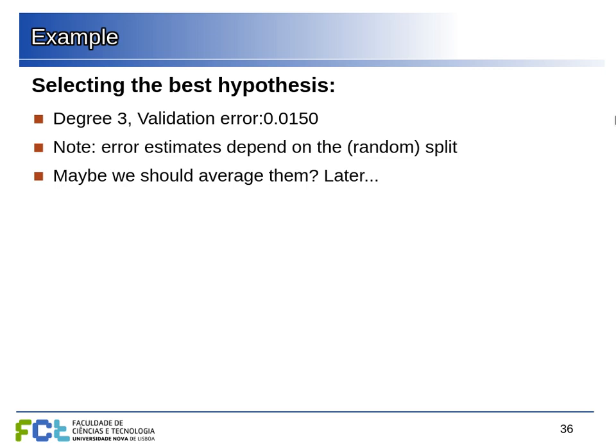Since results depend on the random split, a better approach is to perform multiple train/validation splits and average the results. The test set is always kept completely separate. We'll cover this cross-validation technique next week.